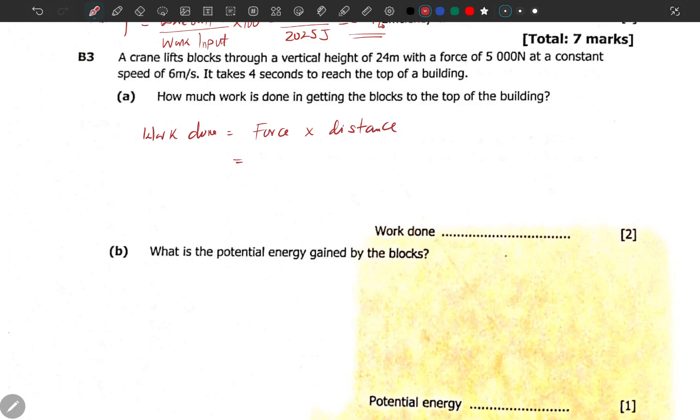In this case, our force is given as 5000 newtons. The distance is 24 meters, small letter m by the way. So this gives us 120,000 joules. You come here, you report 120,000 joules, you get your two marks.